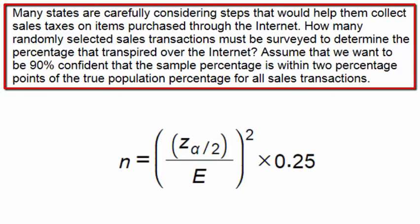Many states are carefully considering steps that would help them collect sales tax on items purchased through the internet. How many randomly selected sales transactions must be surveyed to determine the percentage that transpired over the internet? Assume that we want to be 90% confident that the sample percentage is within two percentage points of the true population percentage for all sales transactions.